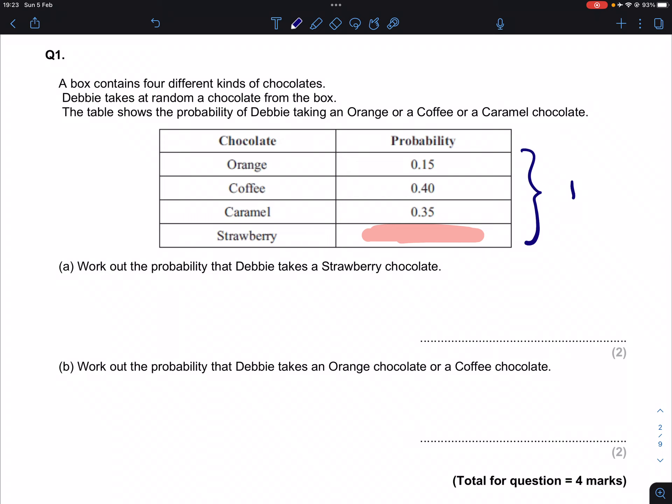Not should, will add up to one. Which means in order to find the probability of getting a strawberry chocolate, we first add together all the probabilities of the rest and then take that answer away from one. So we end up with 0.9 for that, take it away and we'll end up with 0.1.